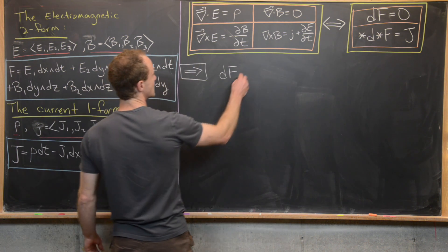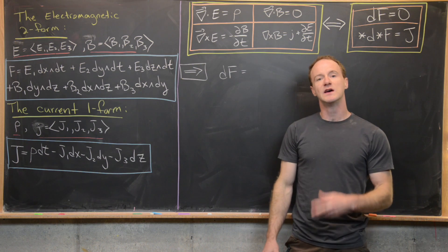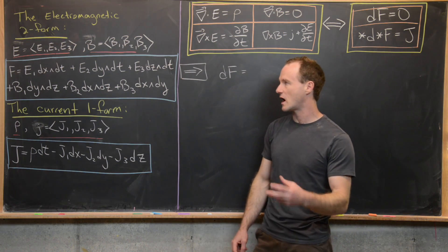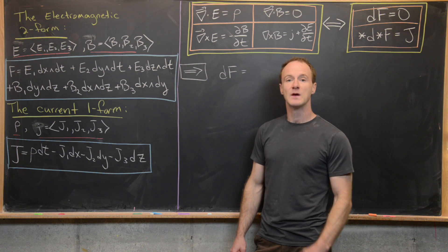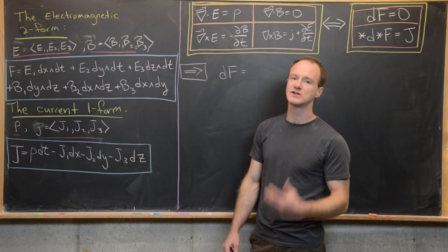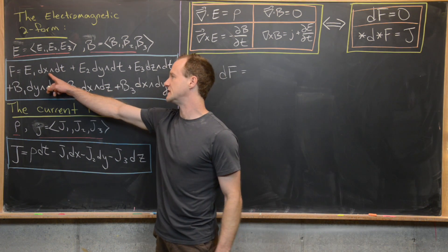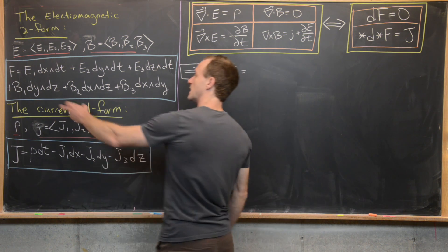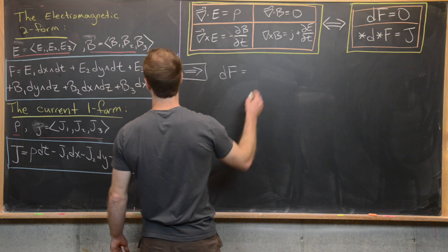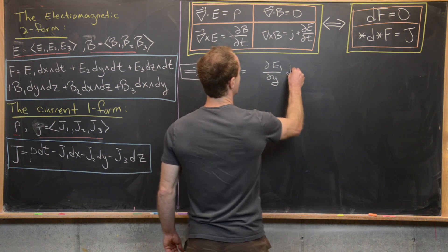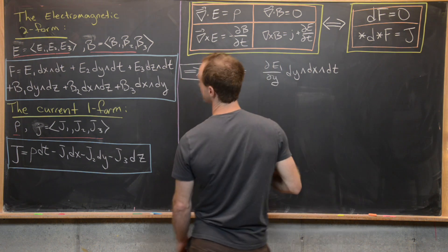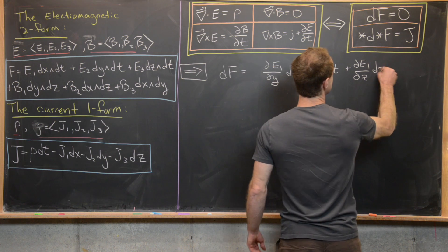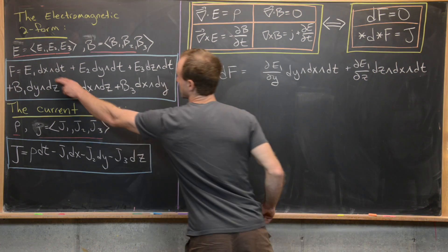We split this into four pieces. For the E1 dx∧dt term, because of the anti-symmetry of the wedge product, we only need to wedge in dy and dz — since dx∧dx and dt∧dt are zero. So taking the exterior derivative of this portion gives: (∂E1/∂y) dy∧dx∧dt + (∂E1/∂z) dz∧dx∧dt.